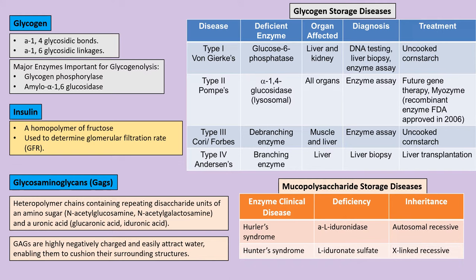In Von Gierke disease, the deficient enzyme is glucose-6-phosphatase, and the clinical features include hepatomegaly and renomegaly. Pompe disease involves lysosomal glucosidase deficiency. McArdle disease involves muscle glycogen phosphorylase deficiency, so muscle glycogen cannot be broken down to glucose, causing lactic acid accumulation and muscle cramping.